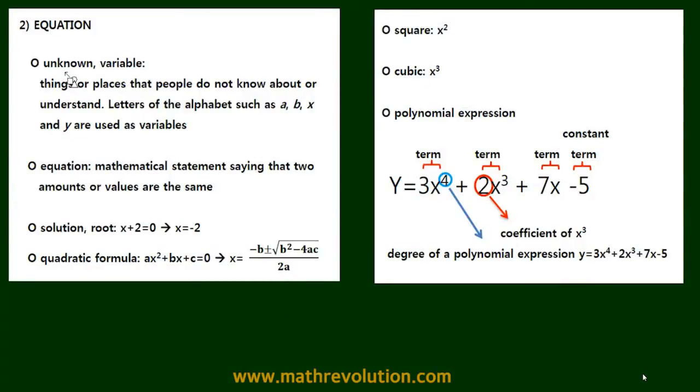We're on the second video of GMAT vocabularies. Now, an unknown or a variable is the things that we don't know yet, and these are normally represented by alphabets such as A, B, X, and Y.